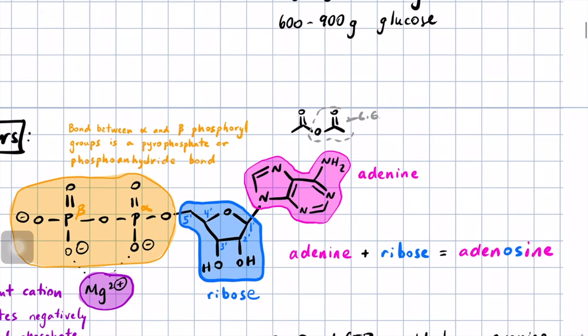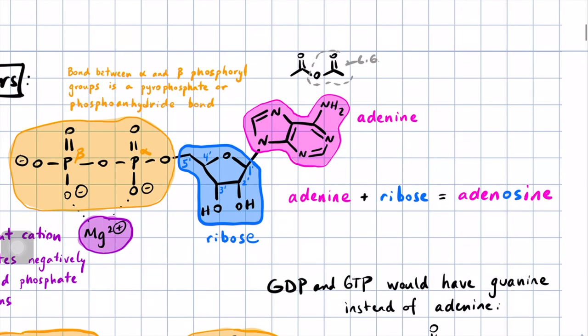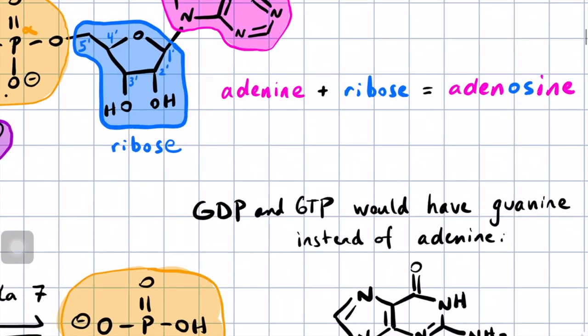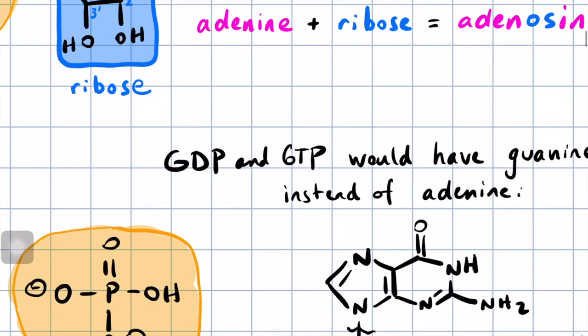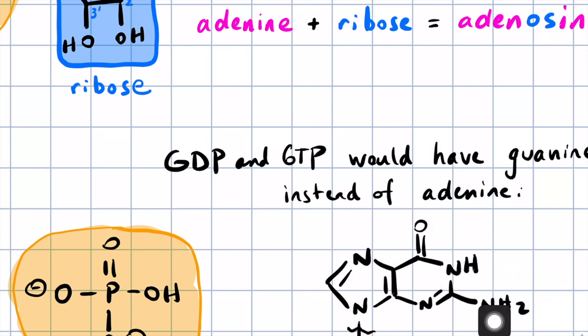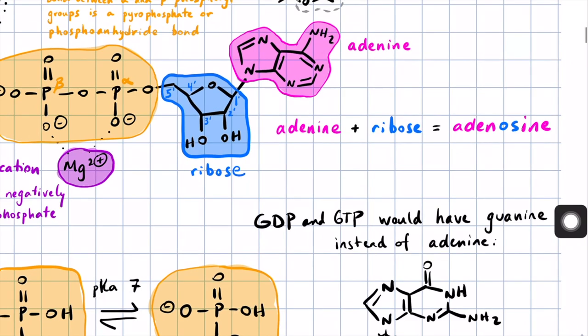In general, what we say for ADP will apply for GDP. There are variant versions that are called guanosine triphosphate because they have this guanine base in place of the adenine base. We won't see GDP and GTP until we get to the citric acid cycle.